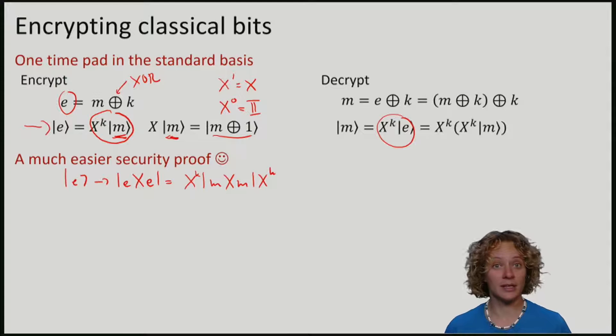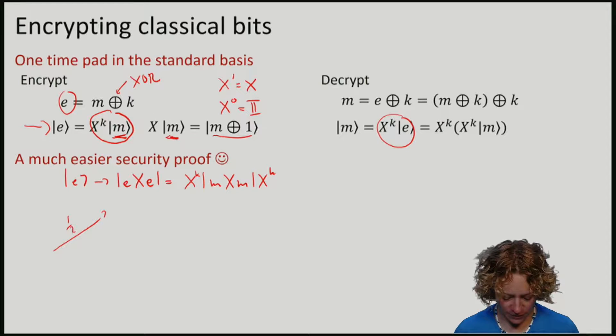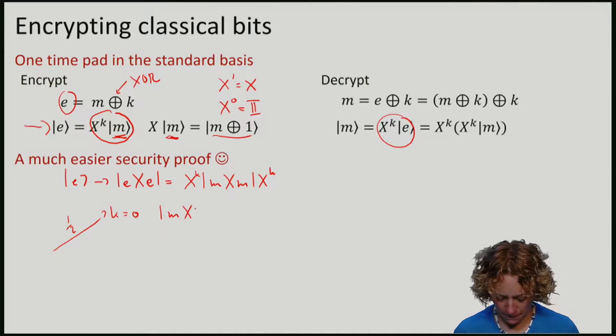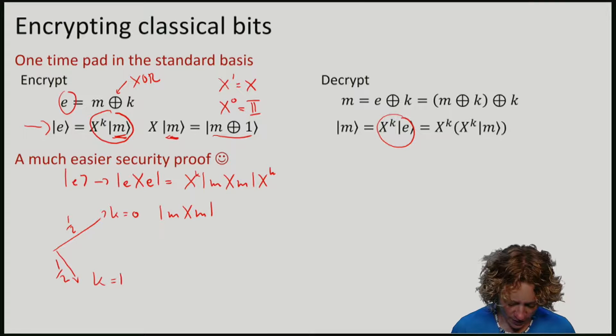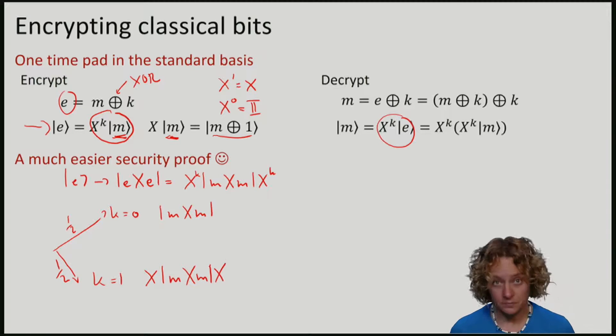Remember that if we are Eve, we know nothing about the key. This means we are faced with a process that with some probability, probability half, the key is 0, generates the matrix M. And with probability half, the key is 1, generates the matrix X applied to M. So here, with probability half, the density matrix M, and with probability half, the density matrix X applied to M. So here, if we average these two things, we get the following density matrix. Half M plus half X M.